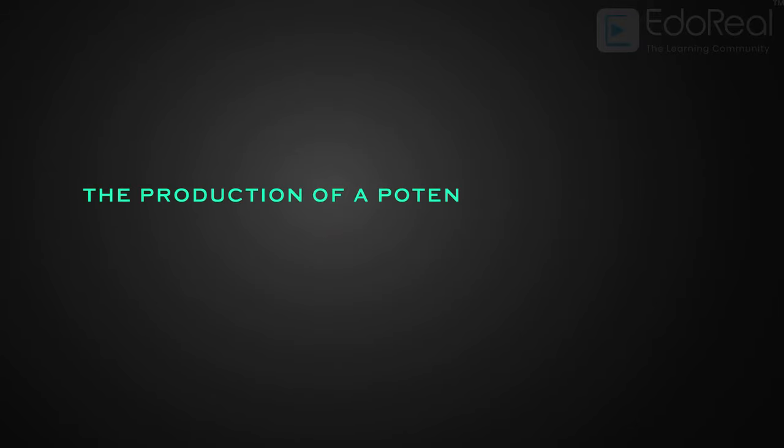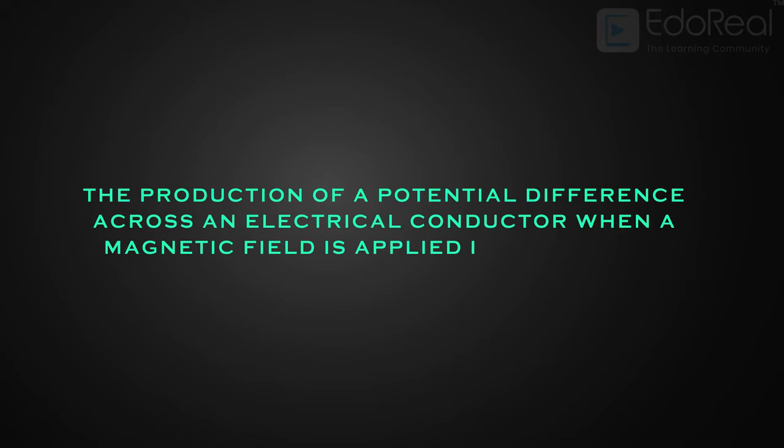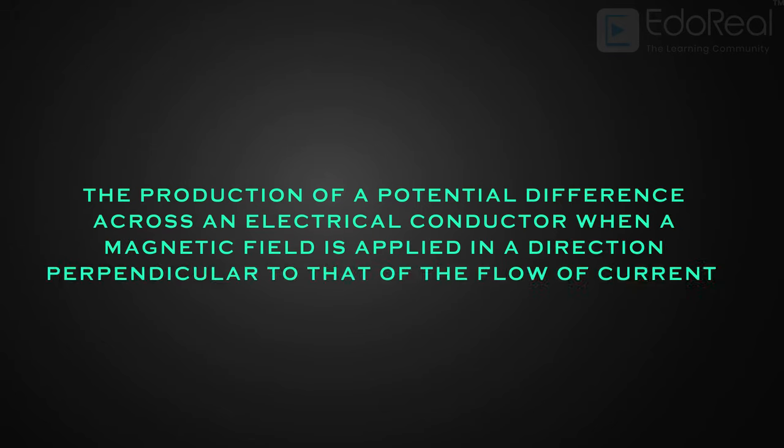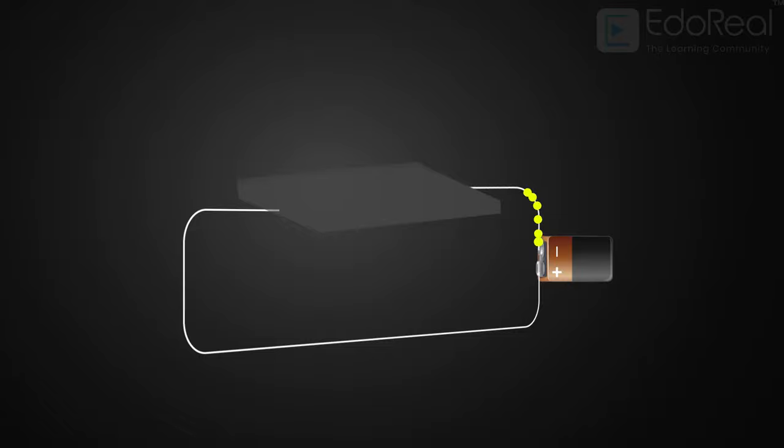The production of a potential difference across an electrical conductor when a magnetic field is applied in a direction perpendicular to that of the flow of current. Let us take a conductor connected to a battery. The electrons inside the conductor take a straight path.